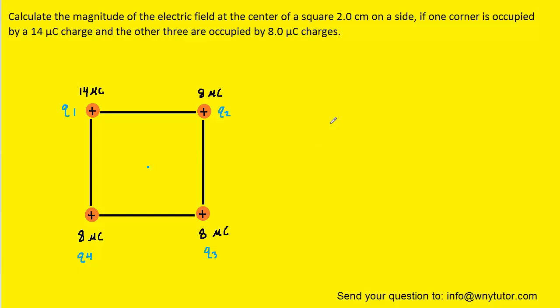Before we make the calculation, let's review the following concept. Whenever we have a positive charge, it will produce an electric field that points away from that positive charge. For example, if there is a position marked by a dot to the right of the charge, the electric field produced by the positive charge would be pointing away from it — in this case to the right. Similarly, for a position below the charge, the electric field would be pointing downward, away from the positive charge.